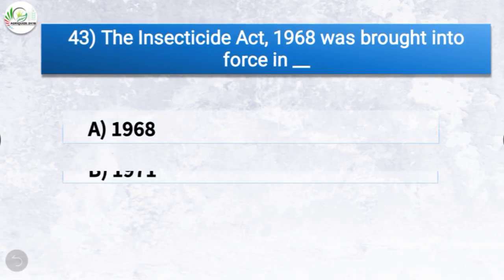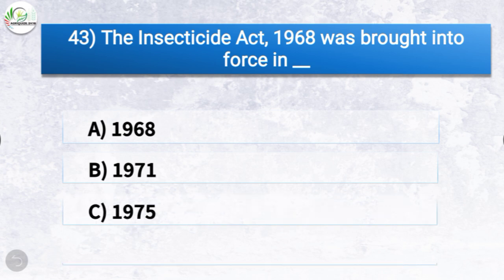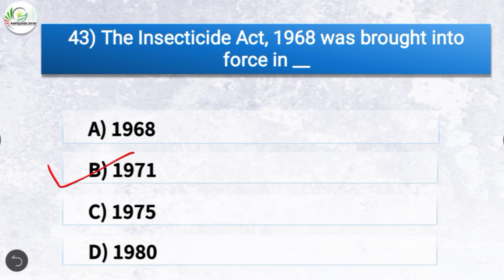Question number forty-three: the Insecticide Act 1968 was brought into force in which year? The options are 1968, 1971, 1975, or 1980. The correct answer is option B, 1971. So the Insecticide Act 1968 was brought into force in 1971.